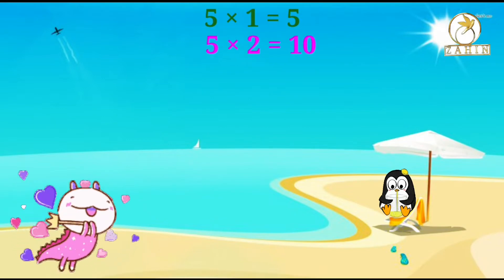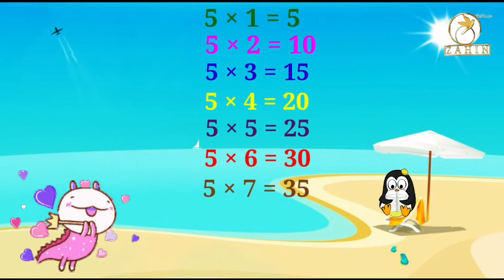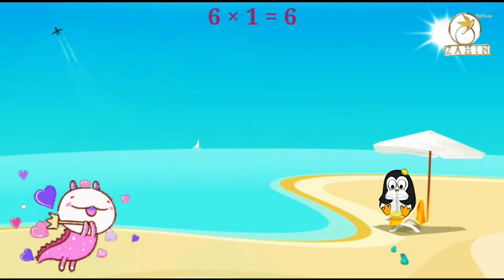5 times 2 equals 10, 5 times 3 equals 15, 5 times 4 equals 20, 5 times 5 equals 25, 5 times 6 equals 30, 5 times 7 equals 35, 5 times 8 equals 40, 5 times 9 equals 45, 5 times 10 equals 50. 6 times 1 equals 6.